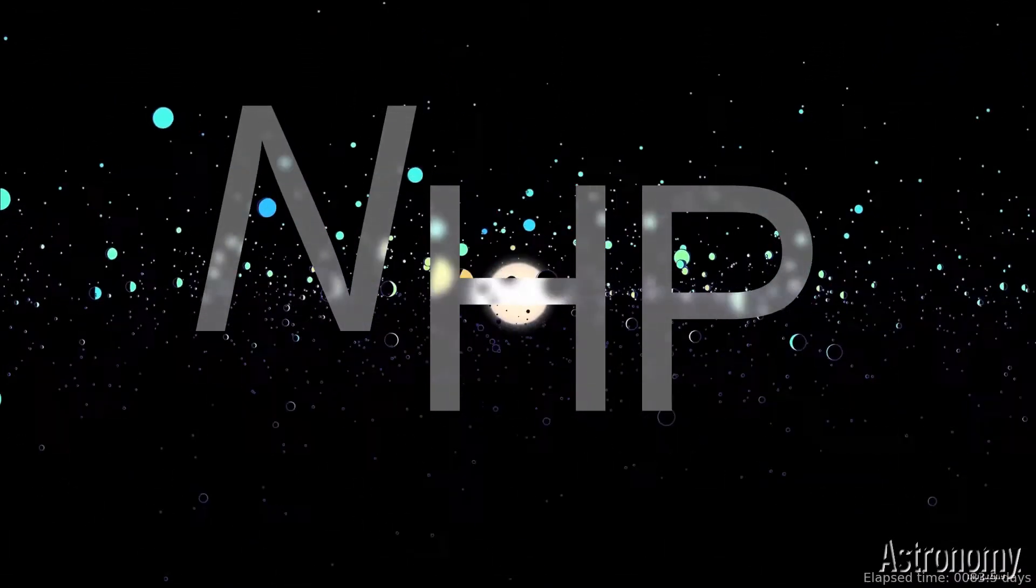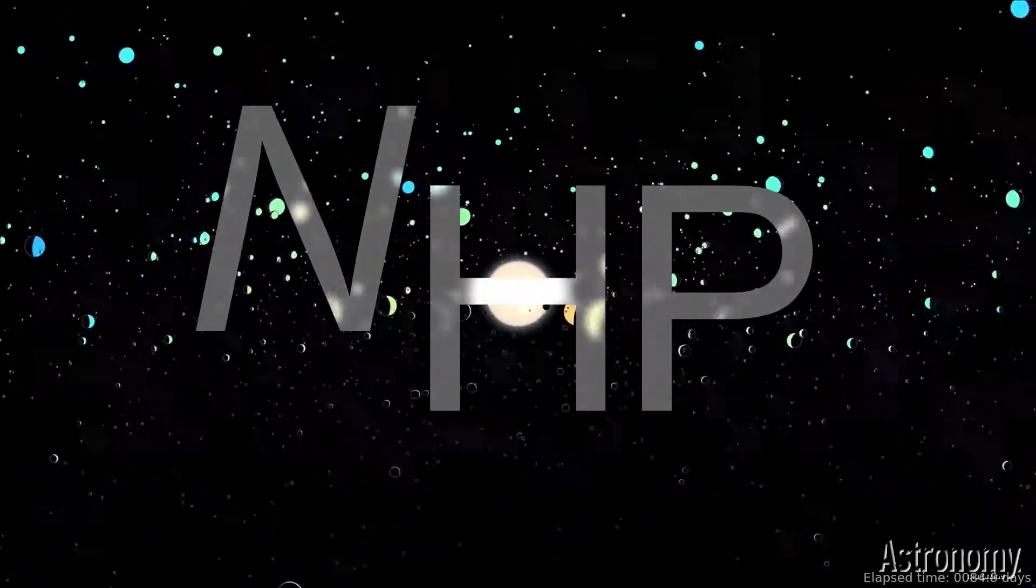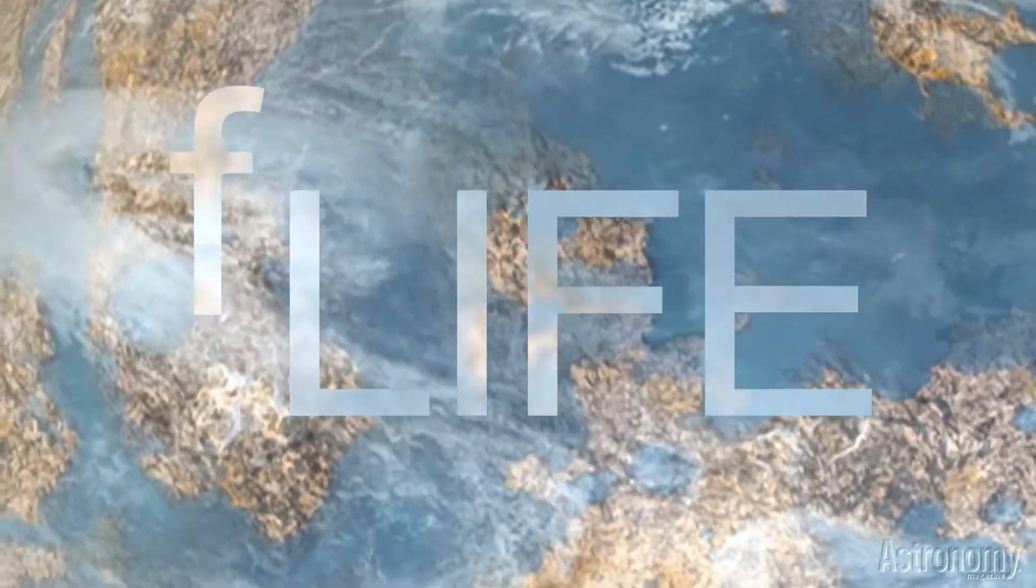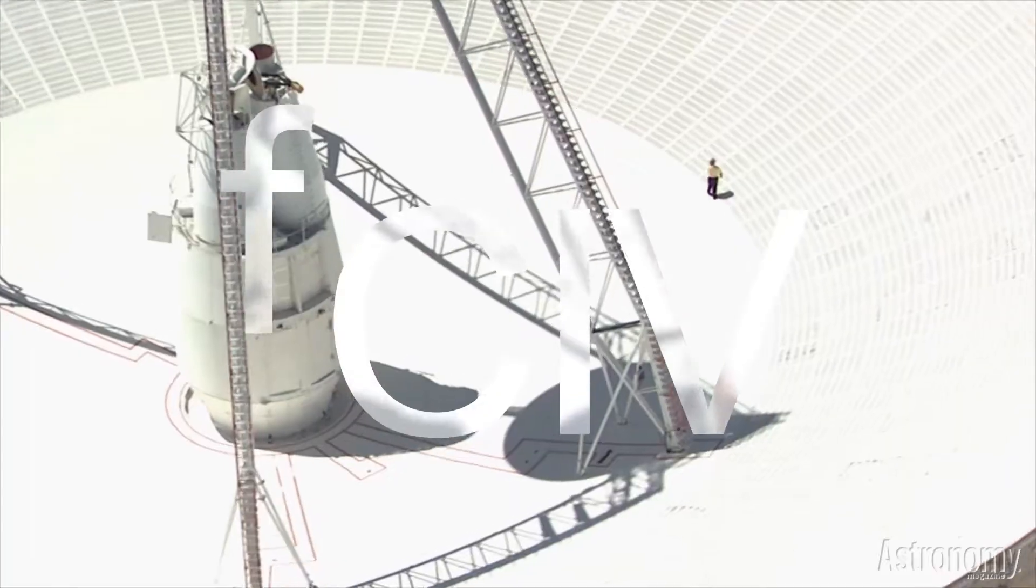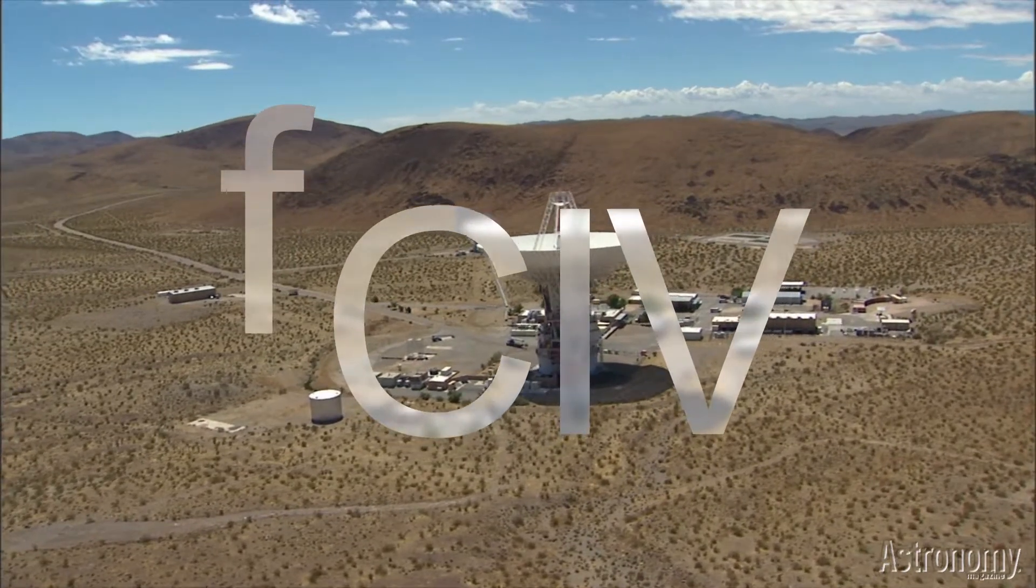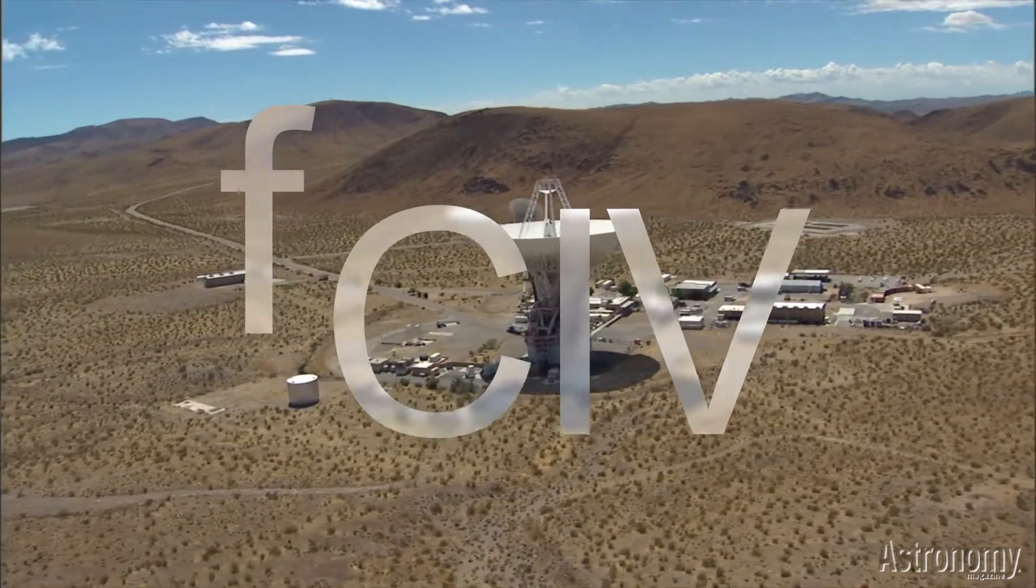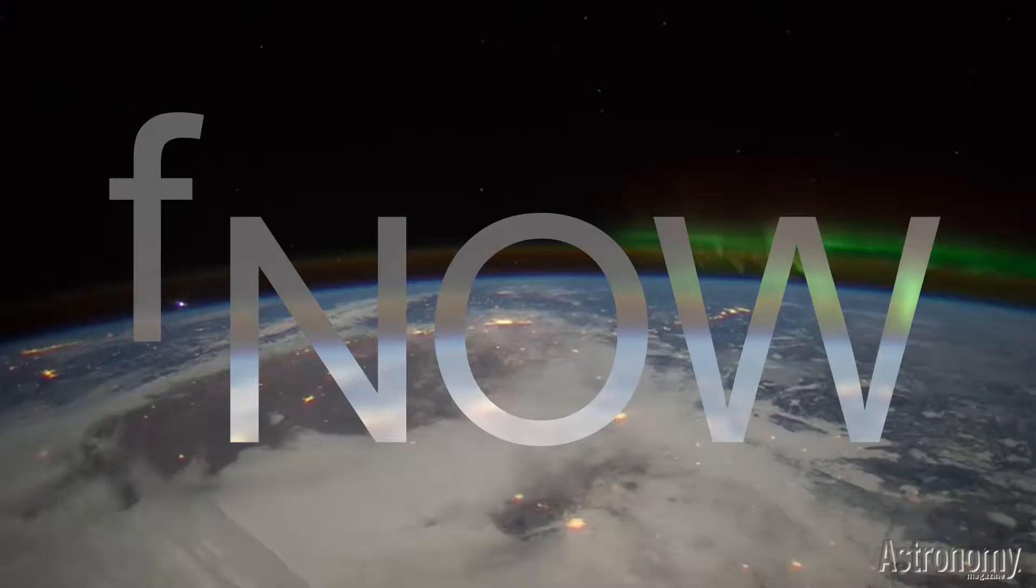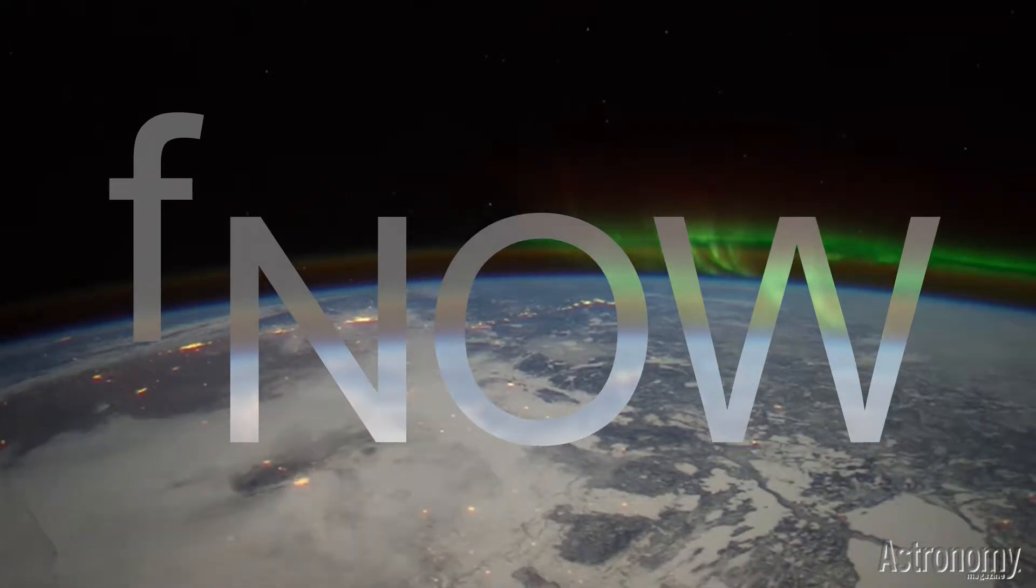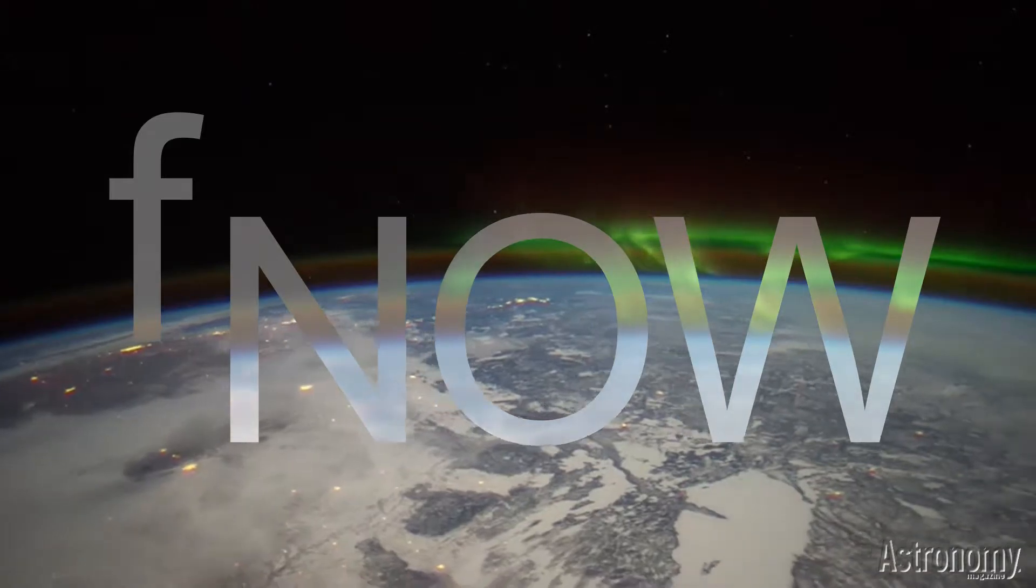NHP is the number of habitable planets in the galaxy. F-life is the fraction of habitable planets that actually contain life. F-civ is the fraction of life-bearing planets on which a civilization capable of interstellar communication has arisen. F-now is the fraction of civilization-bearing planets that have an active civilization at the present time.